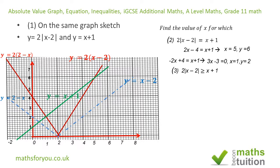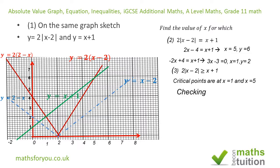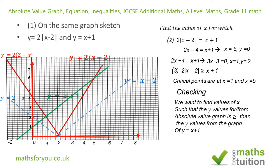For the third section, we solve the inequality: 2 times absolute value of (X minus 2) is greater than or equal to X plus 1. We already have two critical points: X equals 1 and X equals 5. We don't need to re-derive them; we can use our graph. We know that X equals 5 is valid and X equals 1 is valid.